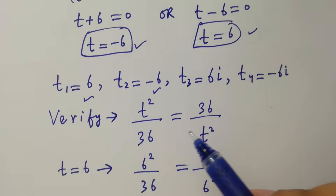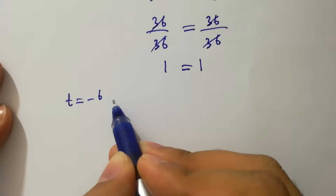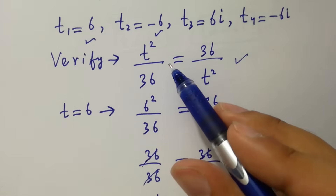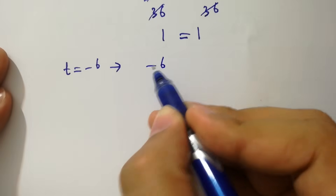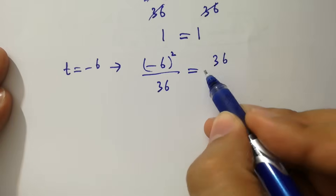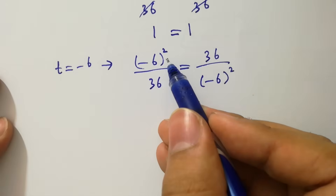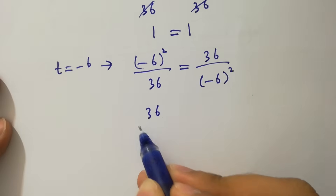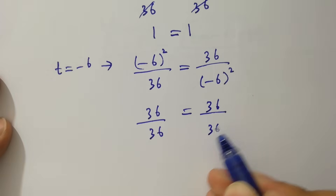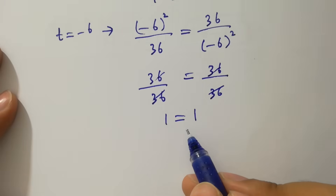Now take t equal to minus 6. It will be minus 6 square over 36 equal to 36 over minus 6 square. Since minus times minus gives plus, and the power is even, it will be 36 over 36 equal to 36 over 36. So we have 1 equal to 1. Left hand side equal to right hand side.